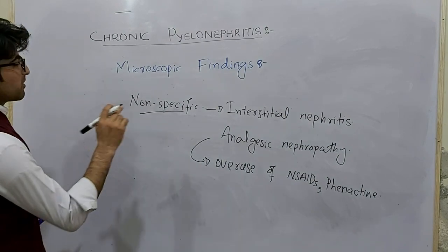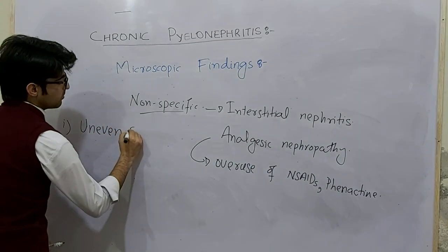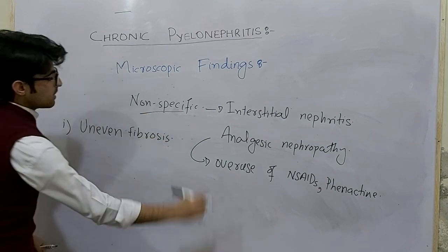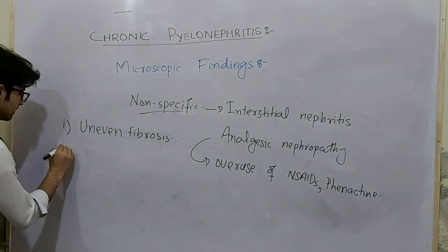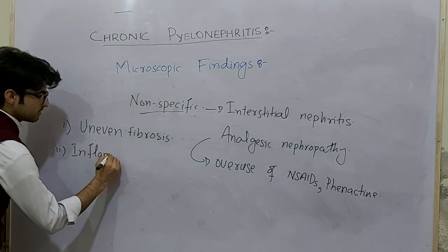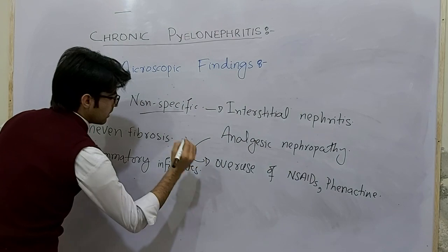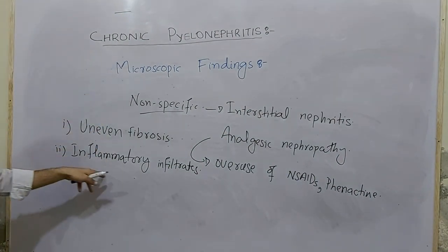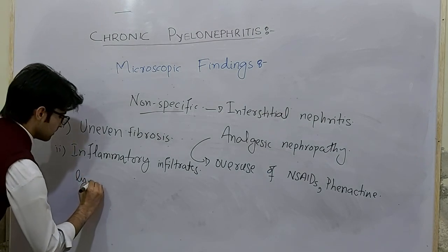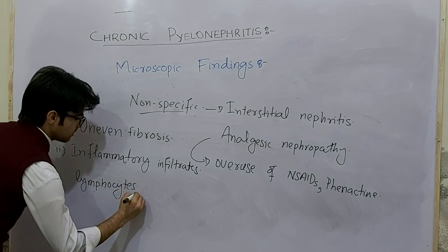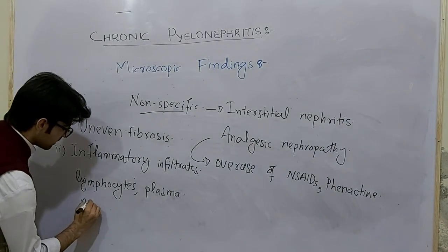The microscopic findings in chronic pyelonephritis include: first, uneven fibrosis of the interstitium of the kidney. Second, inflammatory infiltrates — since this is a chronic inflammation, the infiltrates consist of lymphocytes, macrophages, and plasma cells, though sometimes neutrophils can also be found.